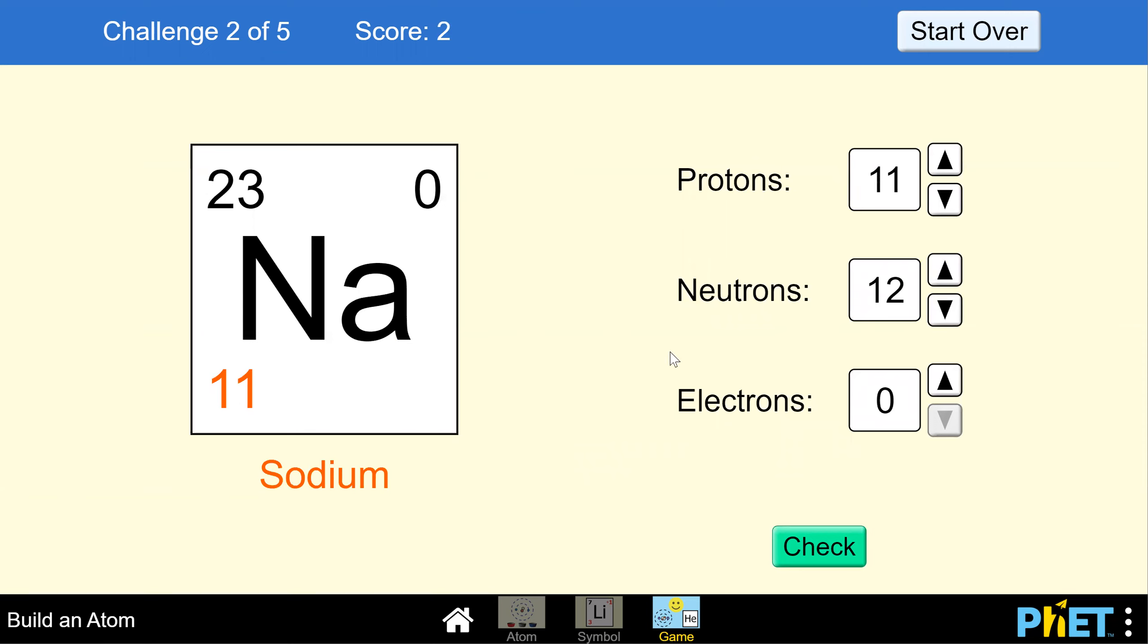It means we have the same number of electrons as we do protons so their charges cancel one another out. Since we have 11 protons, we should also have 11 electrons. And we got it right!